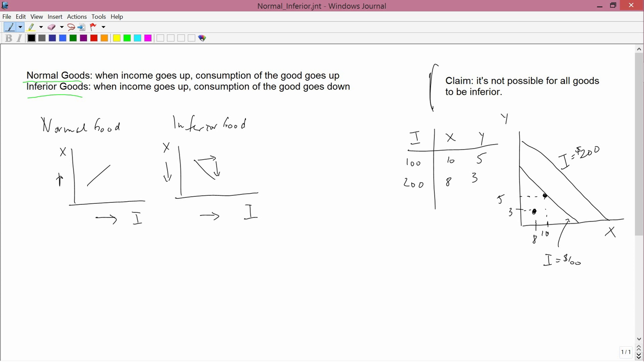Finally, let's investigate normal and inferior goods in the context of the X and Y plane. So we have initial budget constraints, initial positions.